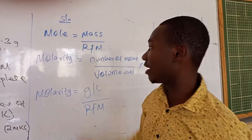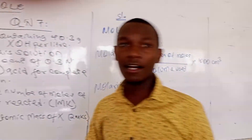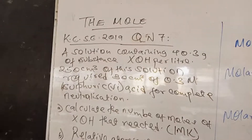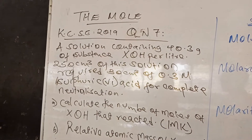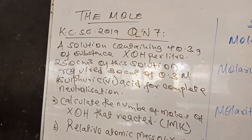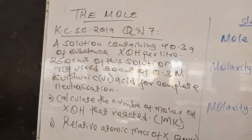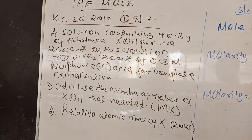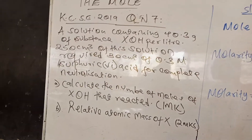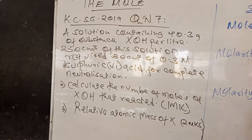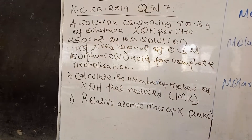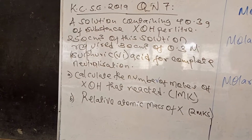Now we are going to apply the three formulas in our question. When we consider the KCC 2019 question: a solution containing 40.3 grams of a substance X hydroxide per litre. 25 cubic cm of this solution required 30 cubic cm of 0.3 molar sulfuric acid for complete neutralization. The question asks us to calculate the number of moles of X hydroxide that reacted.